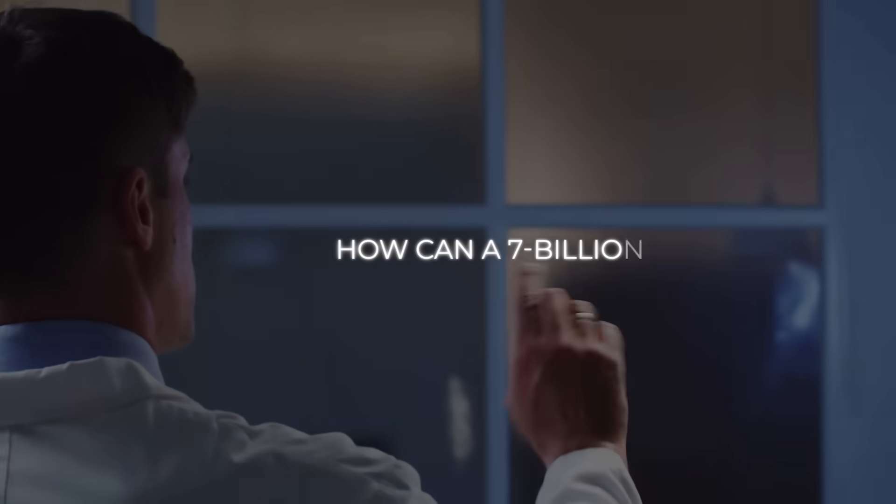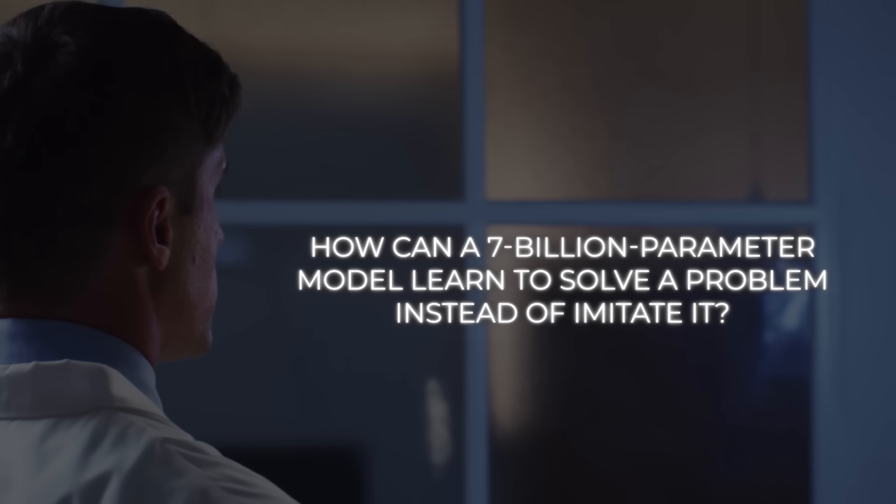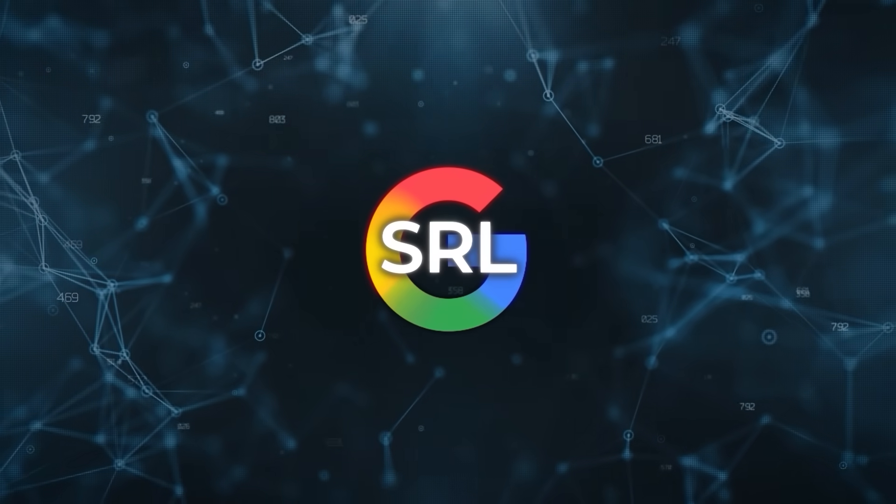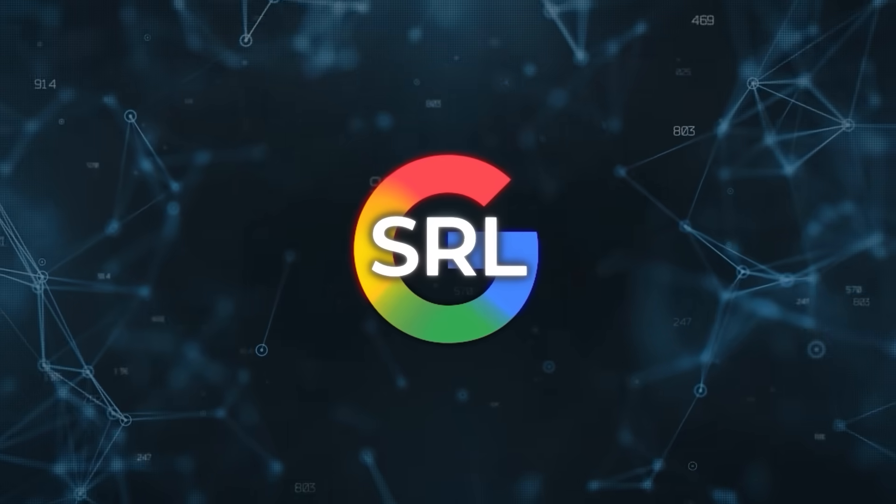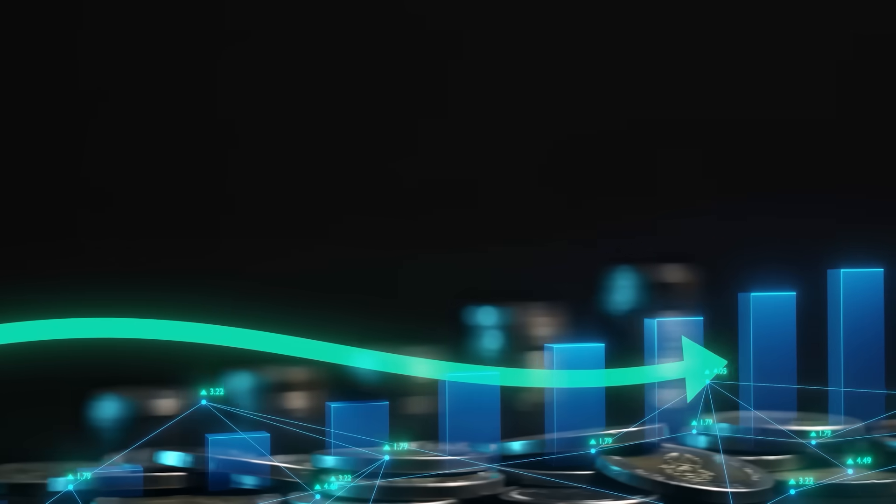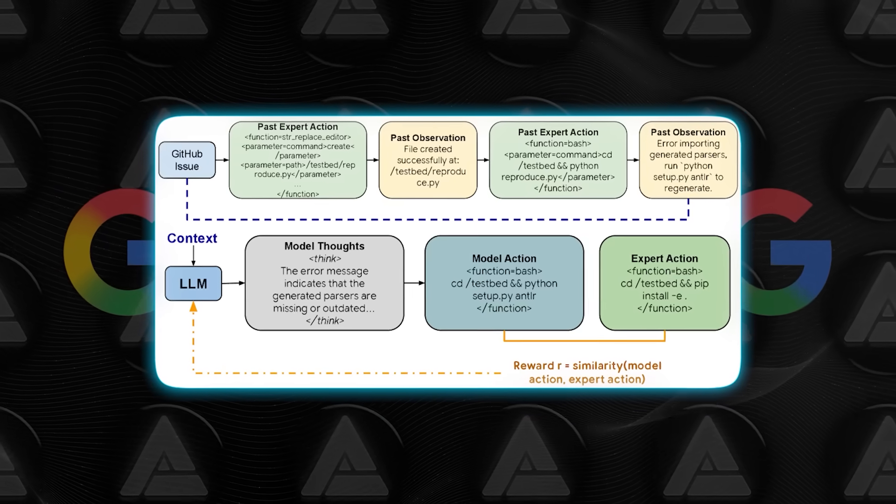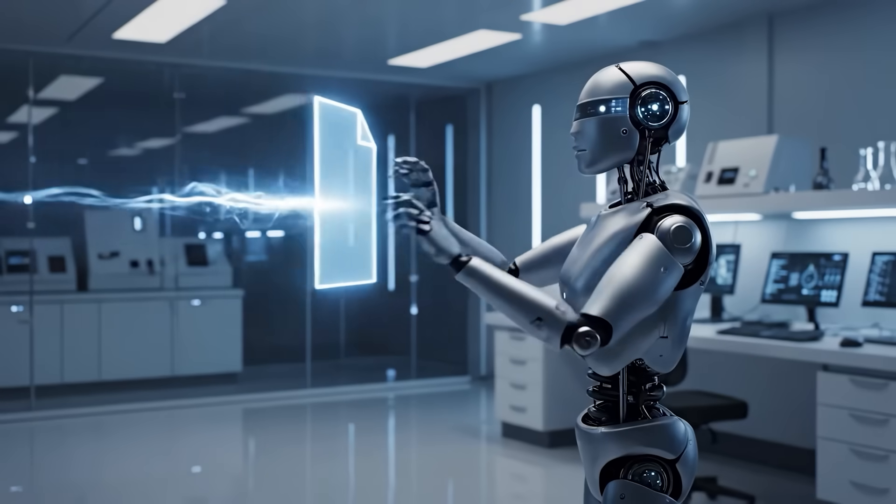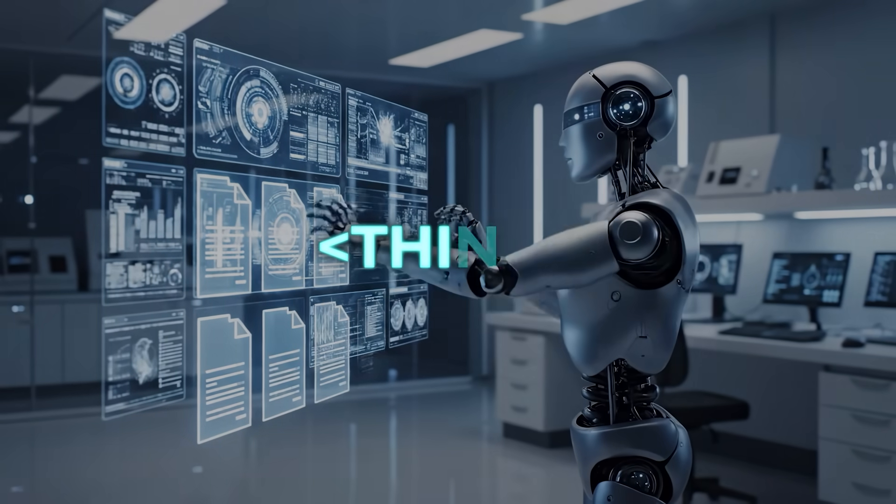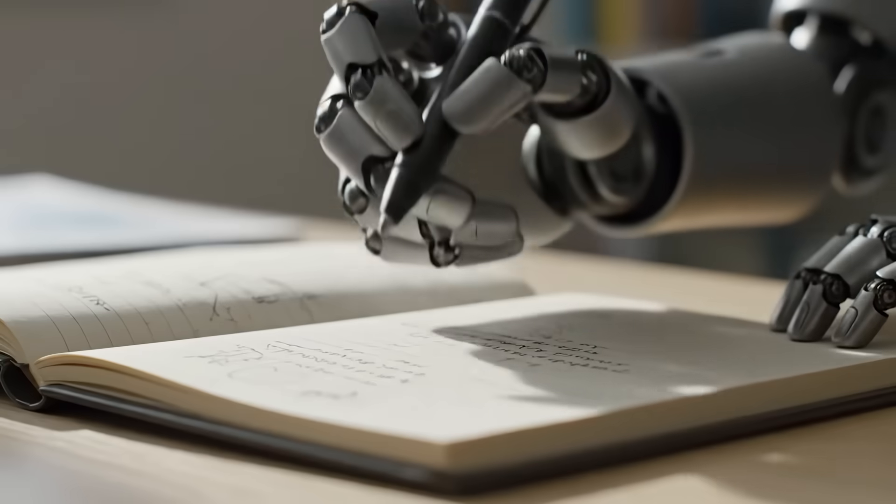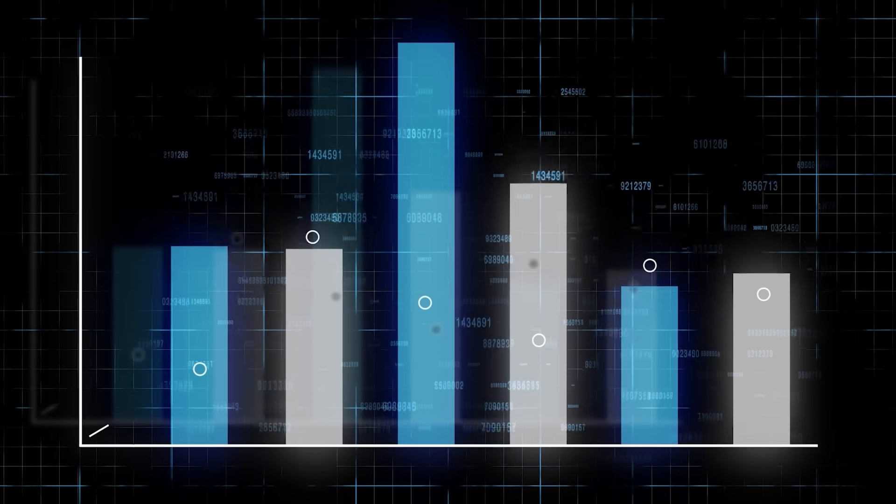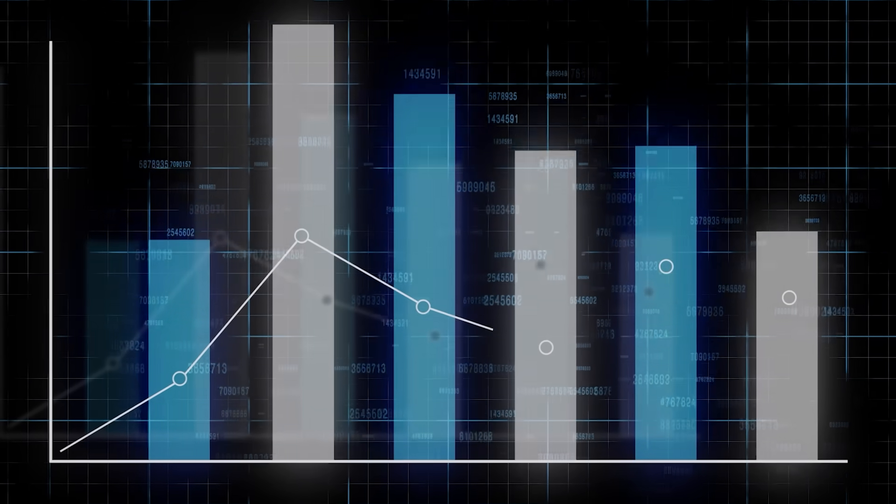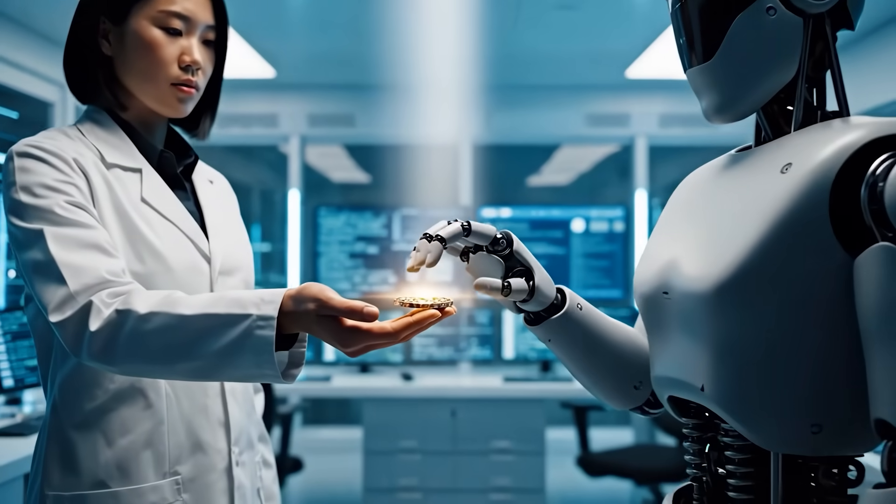So the researchers asked, how can a 7 billion parameter model learn to solve a problem instead of imitate it? Their answer, SRL. It keeps the reinforcement learning structure, but injects supervision into the reward channel instead of the loss. Each expert solution is broken into smaller steps, called expert trajectories. For every prefix in that sequence, the model generates a hidden reasoning section wrapped in think tags. Basically, it's private scratch pad. Then outputs one single action. That action is compared with the teachers using a string similarity metric from difflib, and it gets an immediate reward score.